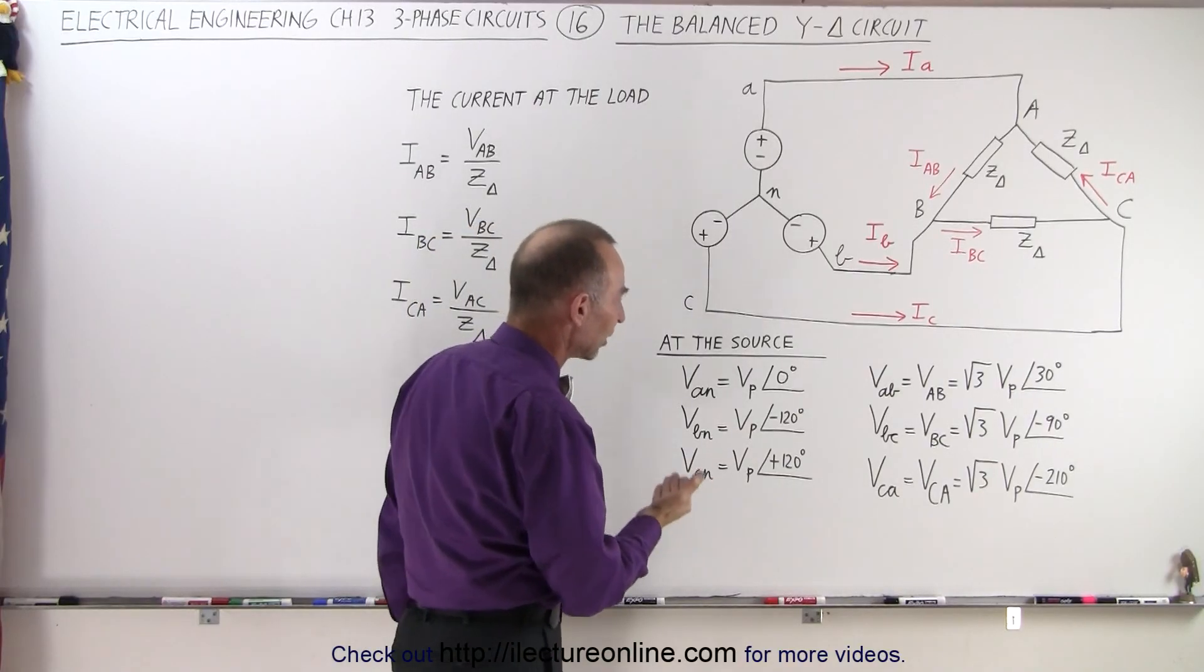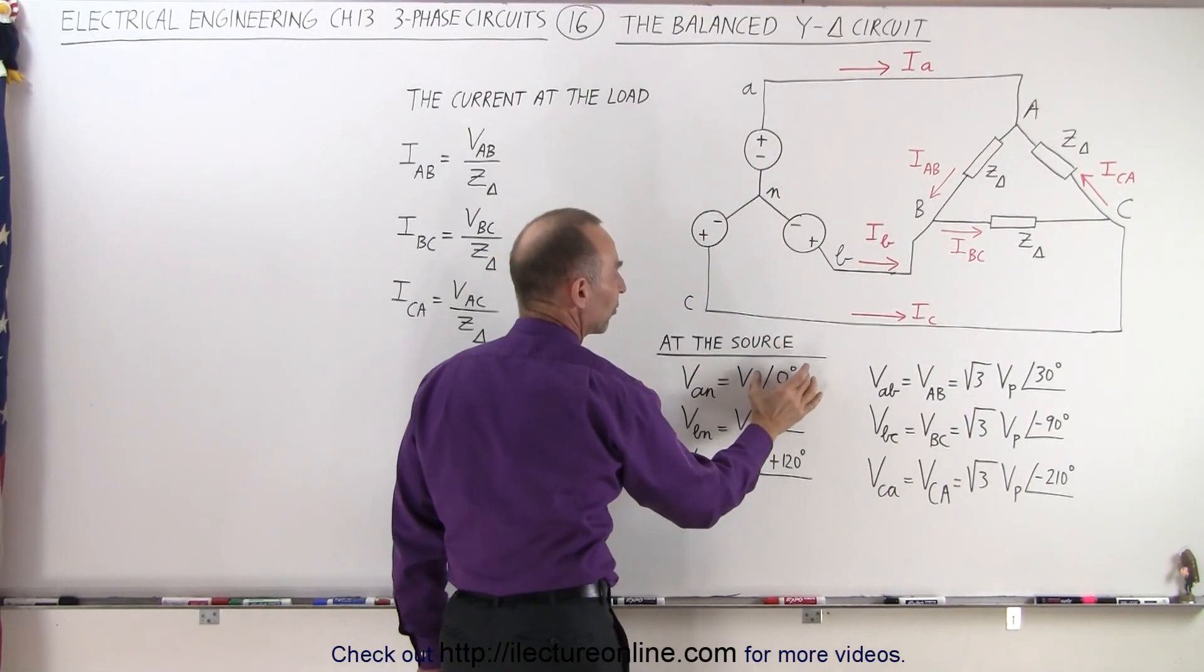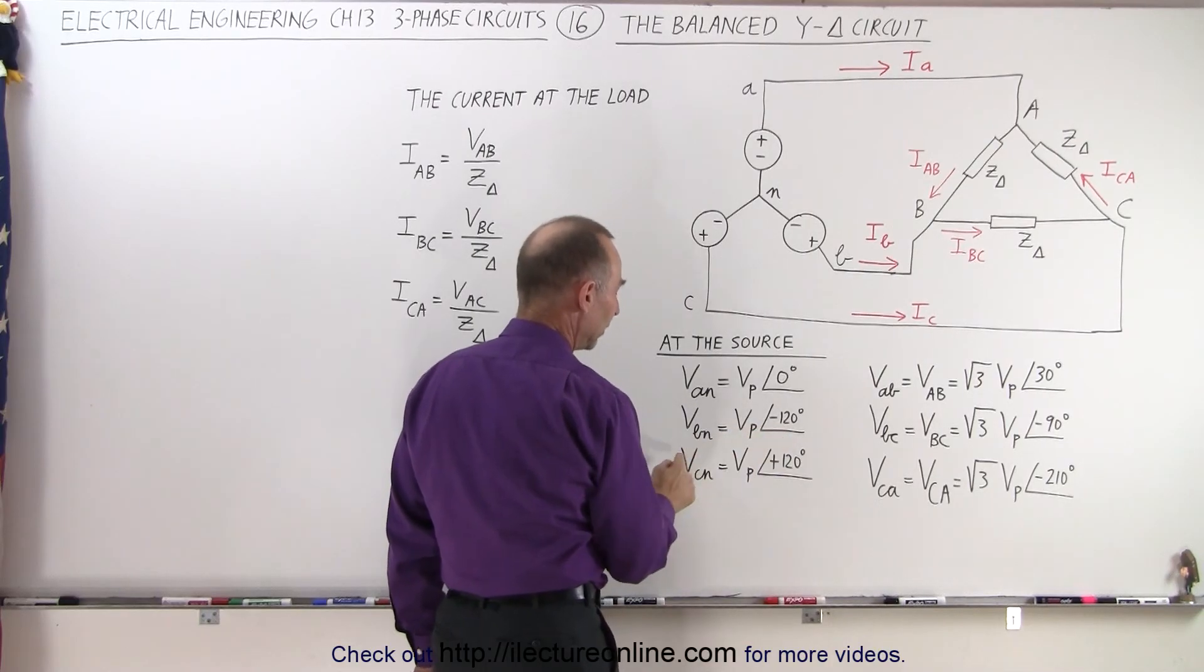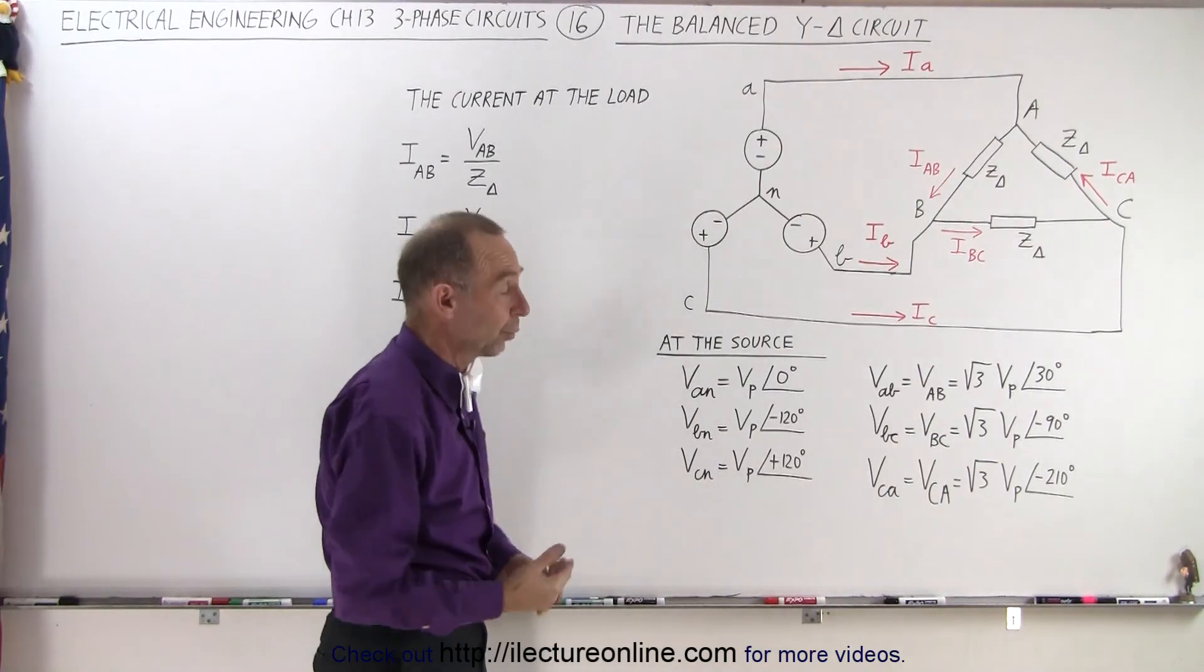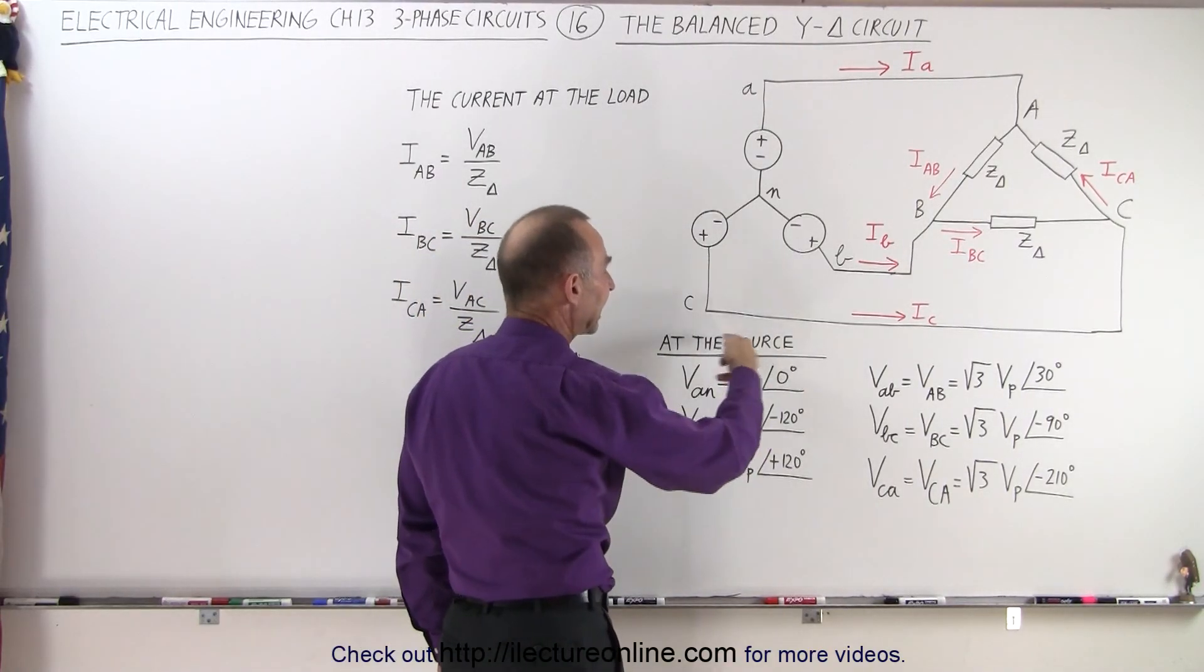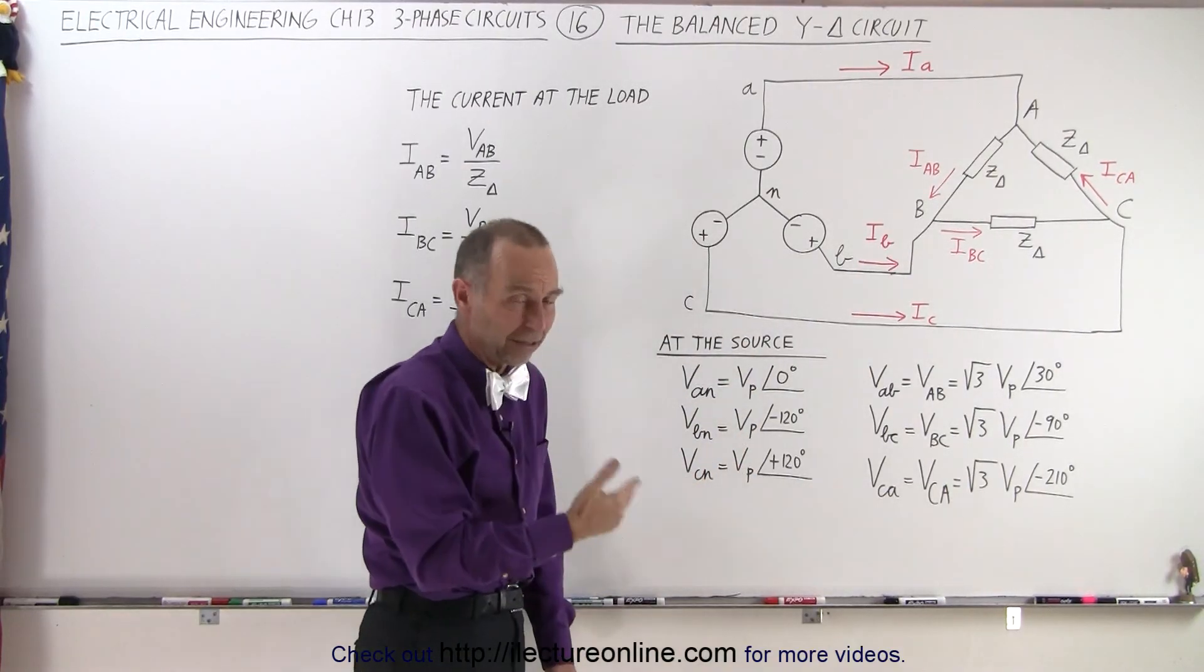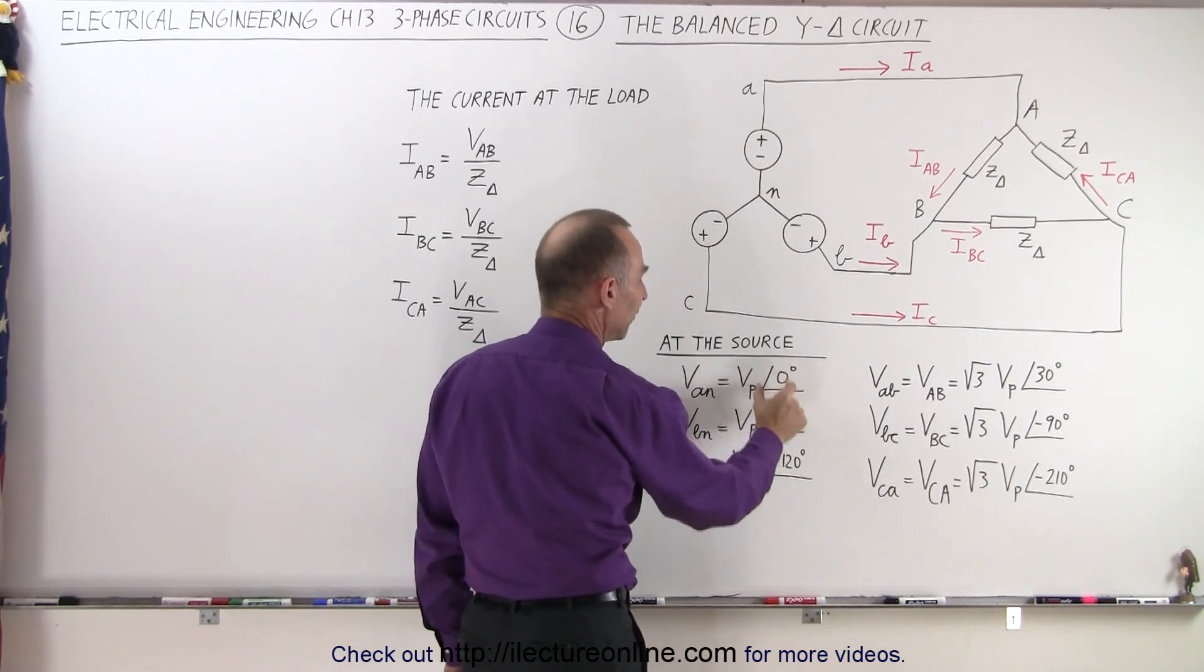Notice the relative phase angle between them: the voltage from A to N, if we consider that to be at zero degrees phase, then the voltage from B to N is at minus 120, and the voltage from C to N is at minus 240, which is the same as plus 120. This is how we indicate the phase voltages: they have a magnitude (typically an RMS value) times the phase angle, in magnitude and phase angle format.